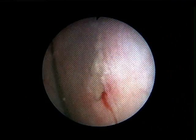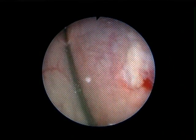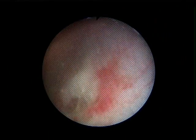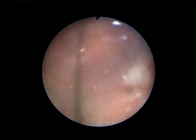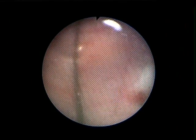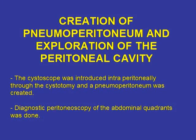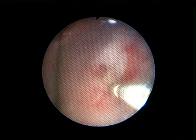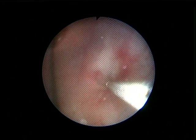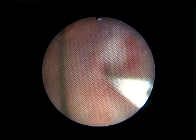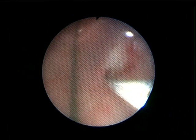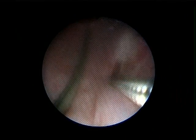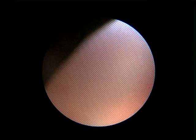The biopsy forceps was used to open the bladder wall and layers under vision. Any bleeding from the surrounding area was diathermized so as to keep the vision clear. The gland forceps was passed through the bladder opening first to confirm that the peritoneum was entered, and the scope was pushed through the bladder opening in a manner that the opening snugly fitted the scope. This prevented any spillage of the bladder contents into the peritoneum.